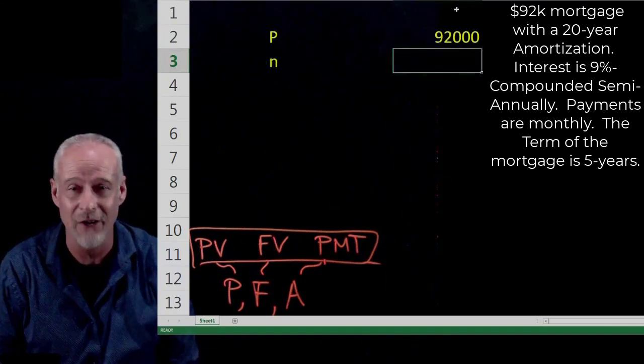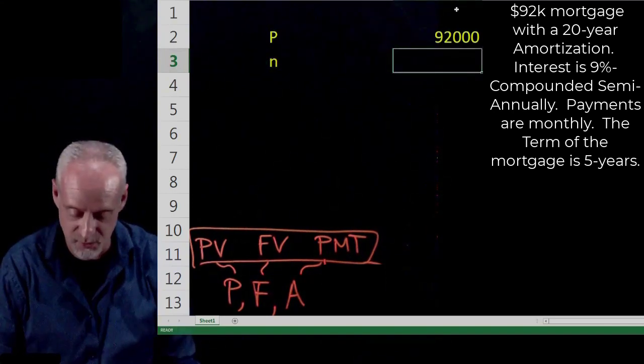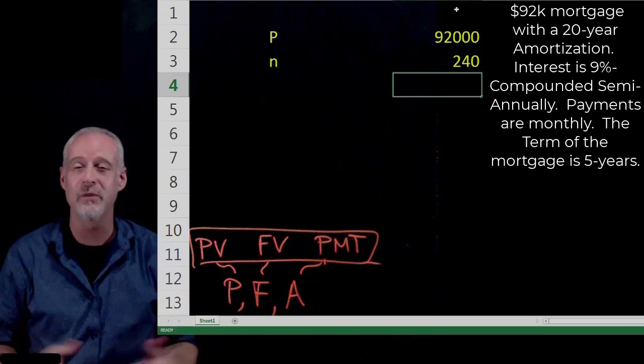I'm going to say our N, our value of our number of periods, was 240. That was the amortization period.